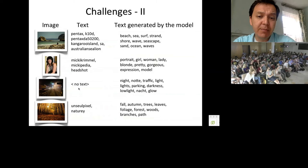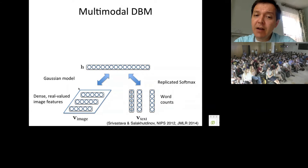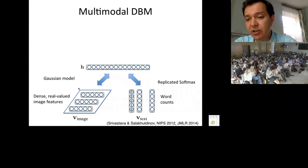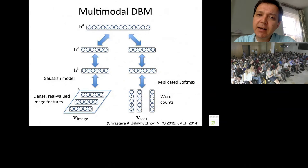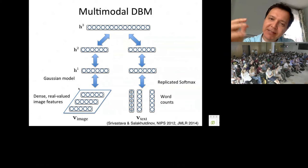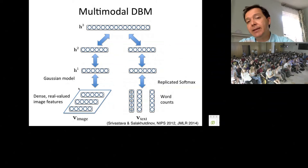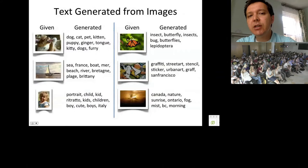Here's an example from the Flickr dataset: an image with no associated text, and the text generated by the model — generating a bag of words that looks reasonable. One approach is to build a hierarchical model using a Gaussian model for real-valued deep image features and a replicated softmax model for word counts. Images are learned in a representation h2, word counts are represented in the same h2 space, and the model then captures dependencies between the two modalities.